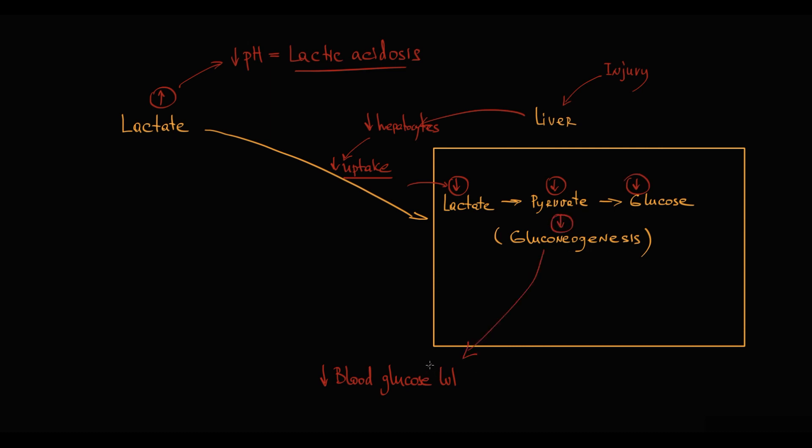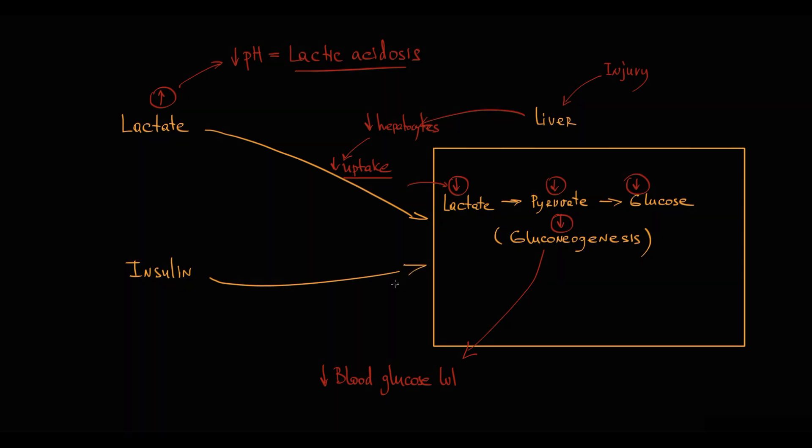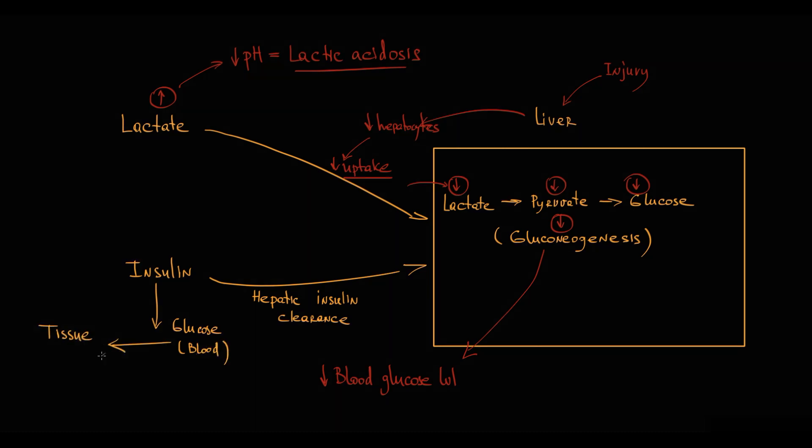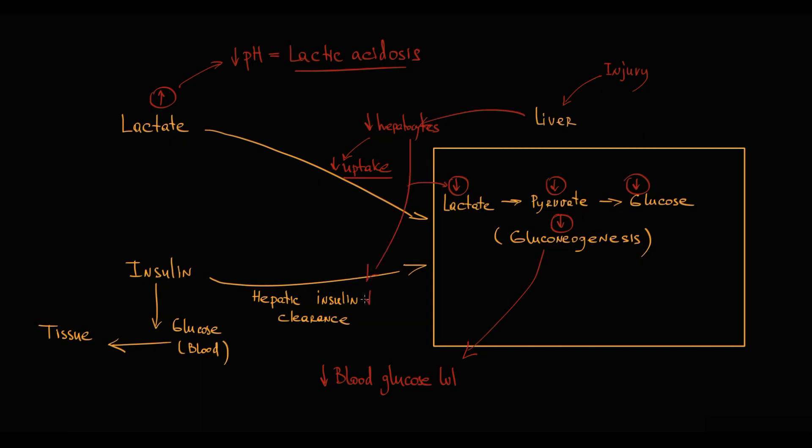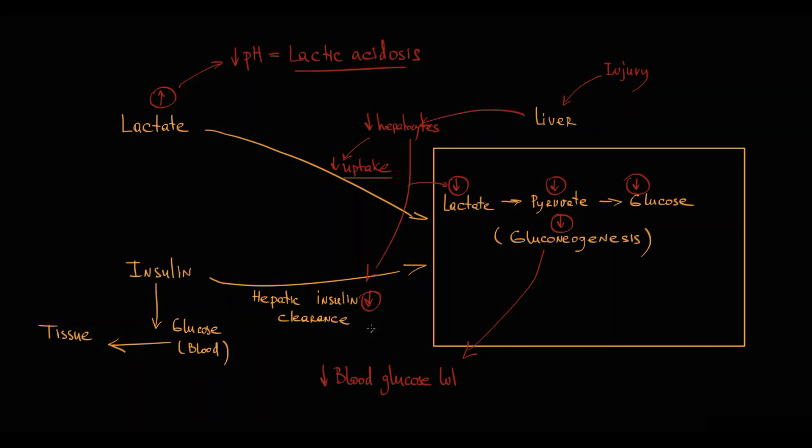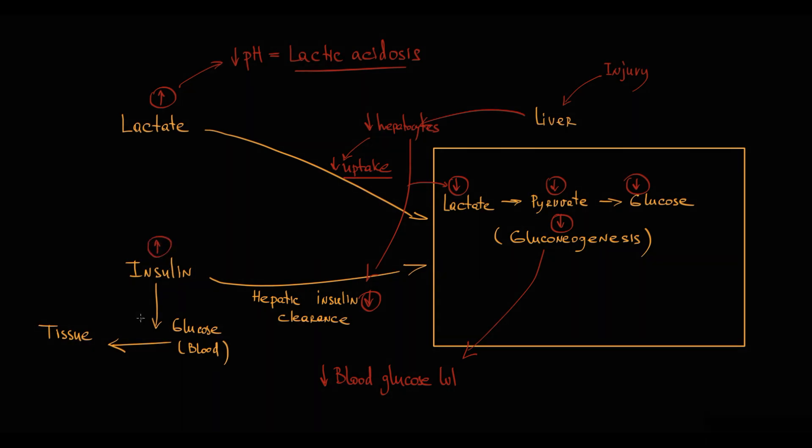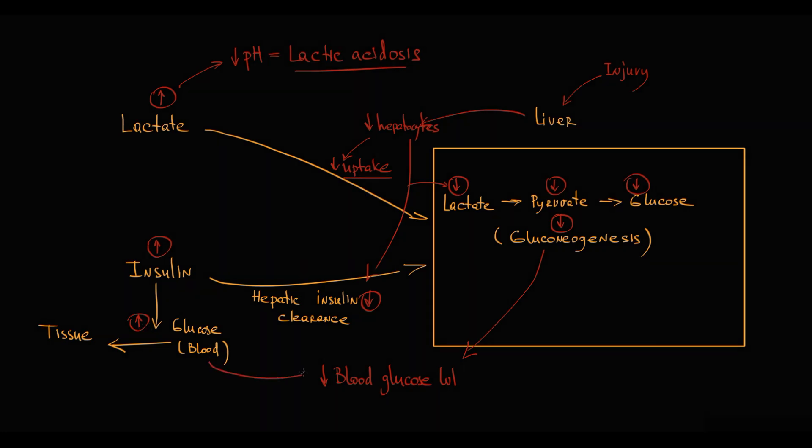Also, hepatocytes regulate insulin level. They uptake insulin and decrease insulin level in blood through hepatic insulin clearance. Insulin transfers glucose from blood into tissue compartment, thereby decreasing blood glucose. When severe liver injury occurs, insulin clearance by hepatocytes decreases, so insulin level in blood increases. The higher the insulin level, the higher glucose exit into tissue compartment, and the lower glucose becomes in blood.